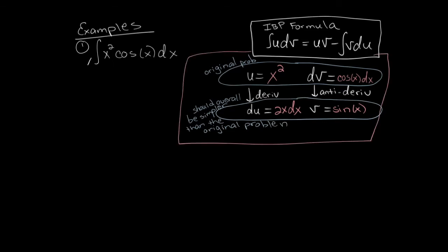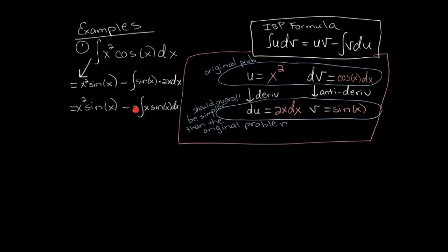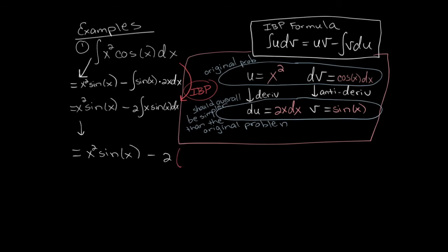Let's actually do this. This integral equals u times v: u is x squared, v is sine x, minus the integral of v times du — that's sine x times 2x dx. We pull out the 2 and write x in front of the sine. We started with x squared times cosine, and after implementing the integration by parts formula we now have x times sine as the integral that needs to be done. That's an improvement — integration by parts is making the problem simpler.